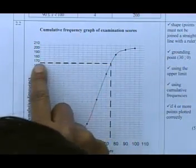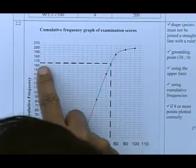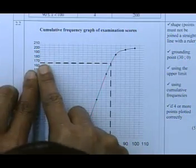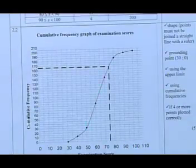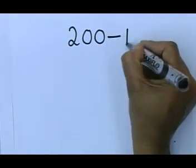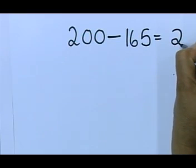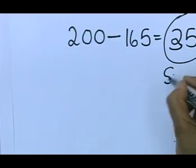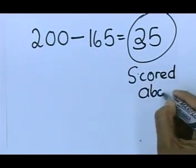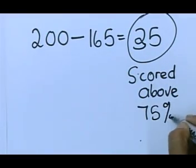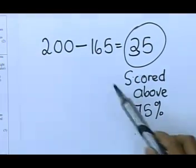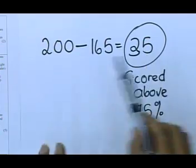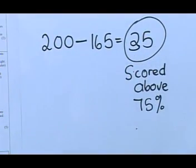On the y-axis I get 165. So the 75 took me to my ogive. And then I drew it to the y-axis. And it gave me 165. Remember the question was how many learners scored above 75%. So what are you going to do? You are going to say that 200 learners wrote this exam minus 165 is 35 learners scored. 35 learners scored above 75%. Remember 165 learners scored below 75. So you have to say 200 minus 165 is 35. I hope you get that sum. 35 learners scored above 75%.